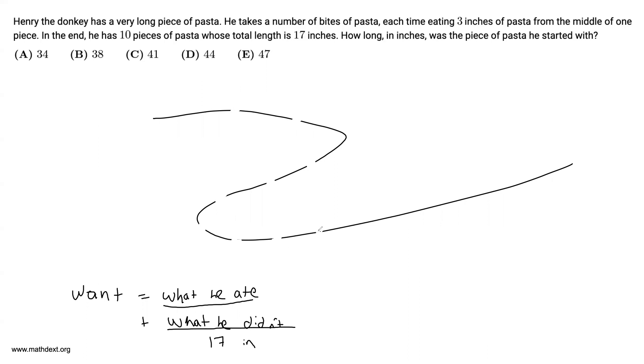So over here, we see that he has one, two, three, four, five, six, seven, eight, nine, 10 pieces of pasta. How many bites did he take? Well, you might be tempted to say he took 10 bites, but that's actually not the case because he took one, two, three, four, five, six, seven, eight, nine. He took nine bites of the pasta.